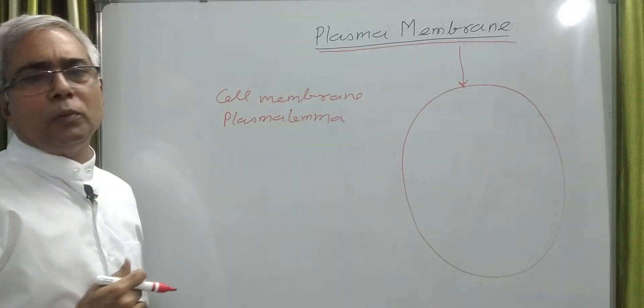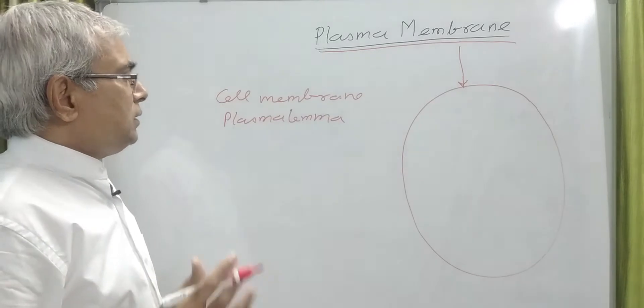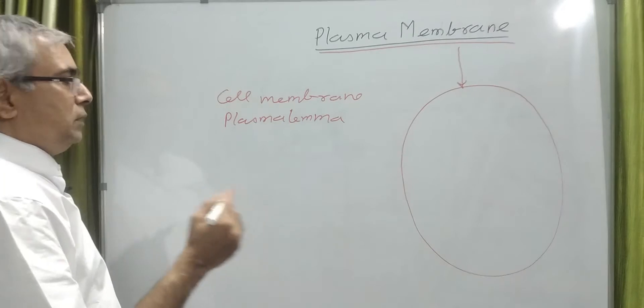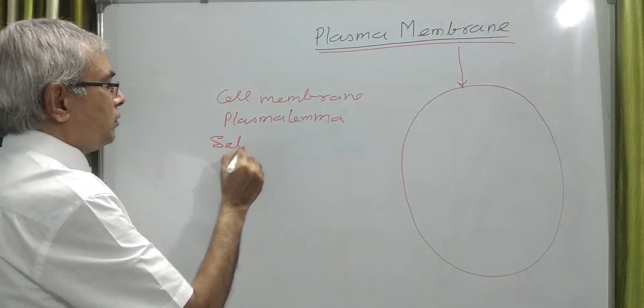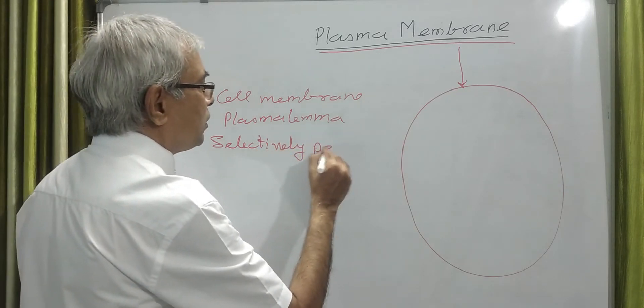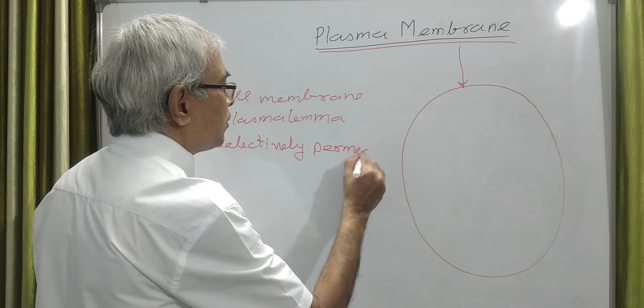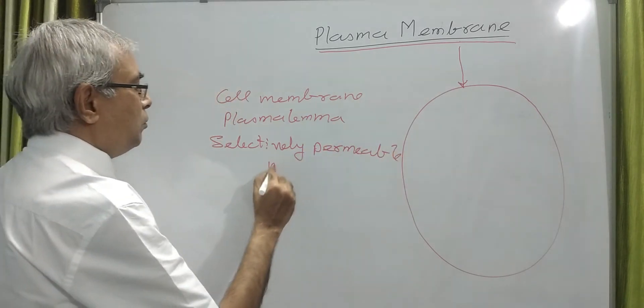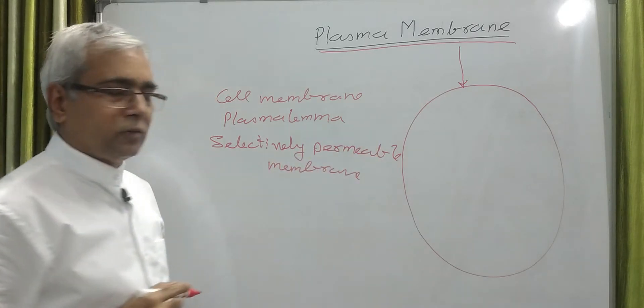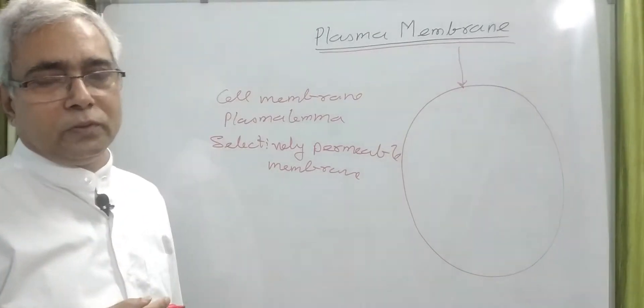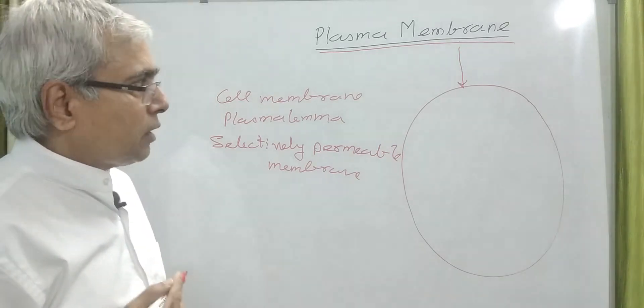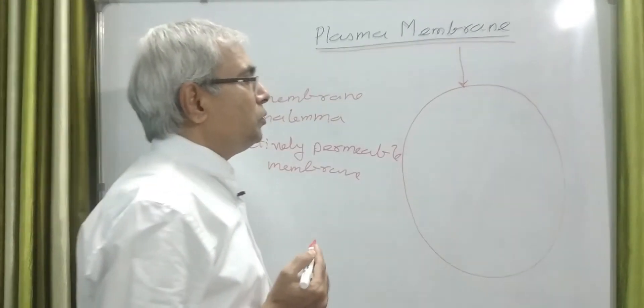Plasma because it surrounds the protoplasm. There is another term used to designate the same structure: selectively permeable membrane. This membrane name defines the function it performs.